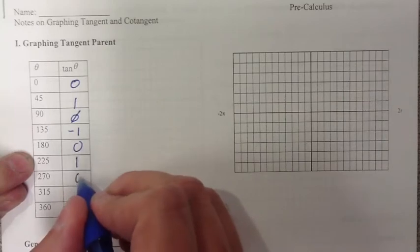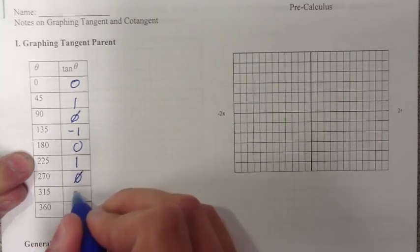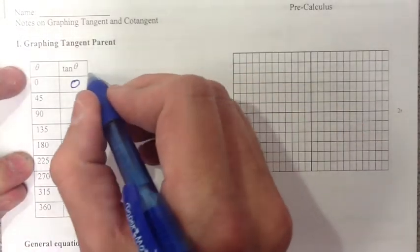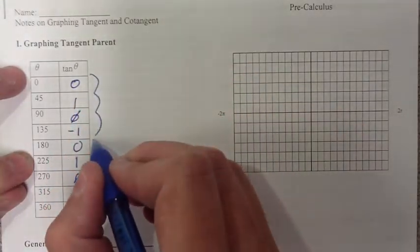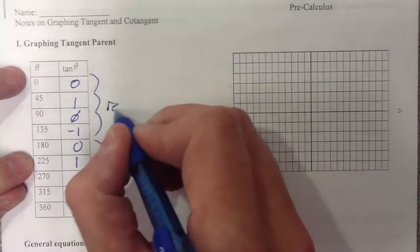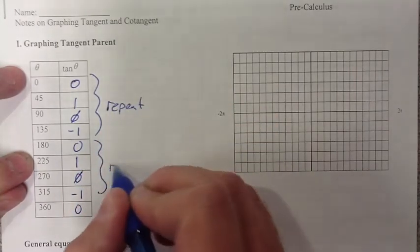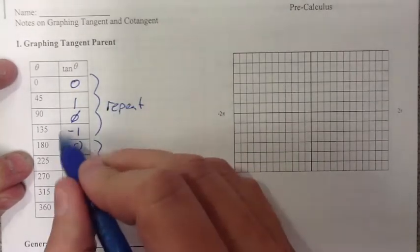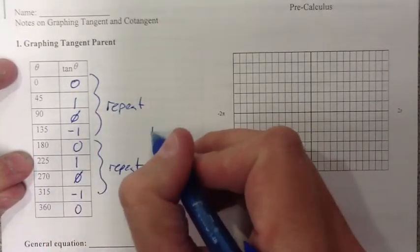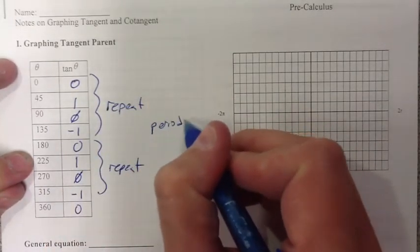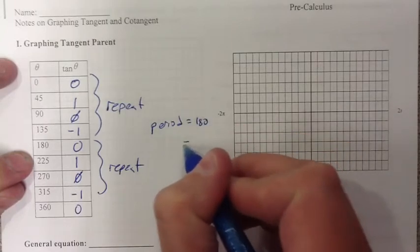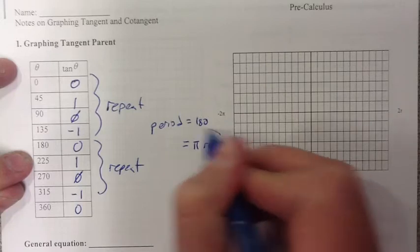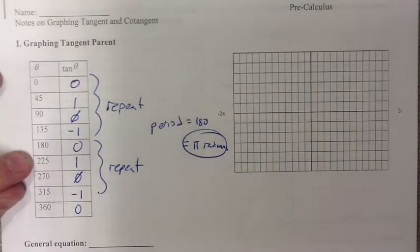We're going to talk about how tangent will just repeat itself, and that's very important for us because tangent doesn't have a period of 2π like sine and cosine. Tangent repeats every 180 degrees, so tangent's period is 180 degrees or π radians.